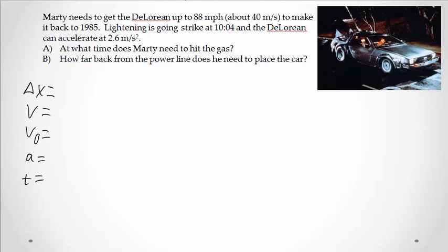The DeLorean has an acceleration of 2.6 meters per second. So we need to figure out when Marty needs to hit the gas. Just like before, I want to start out with my list of stuff. He needs to get up to 40 meters per second. That's what he needs to end up at. We assume he's starting at rest. So we're going to put zero here for his initial velocity. We're given an acceleration of 2.6 meters per second.